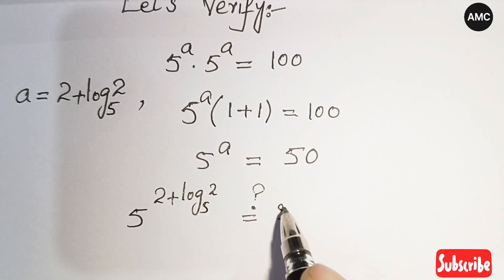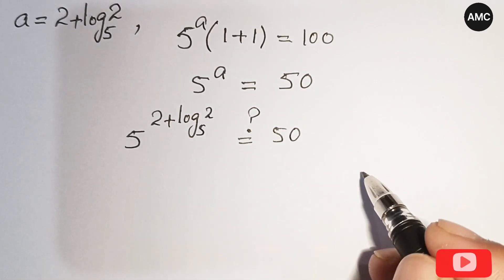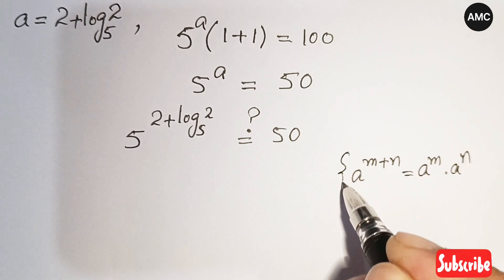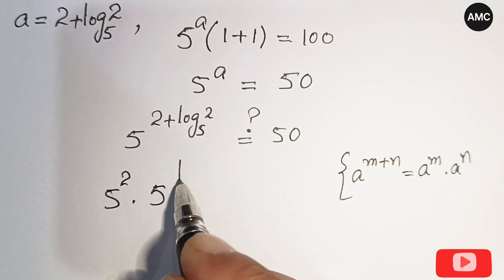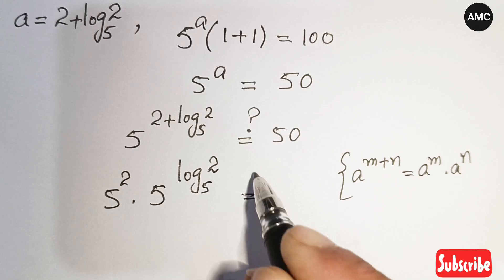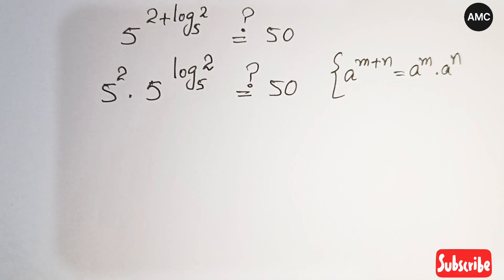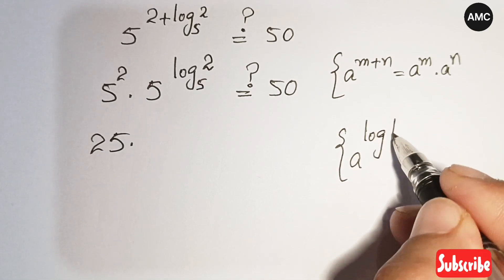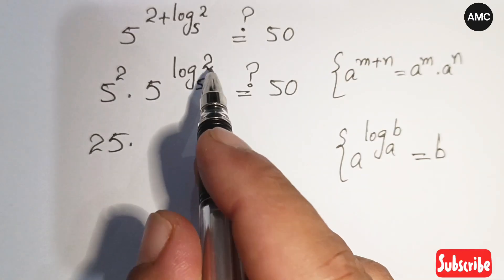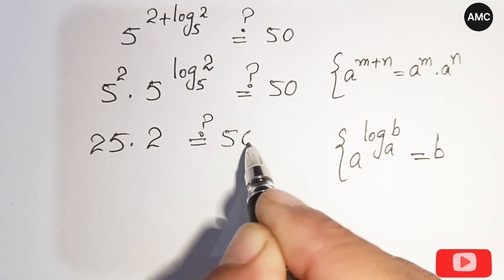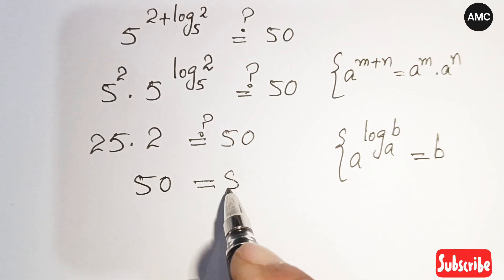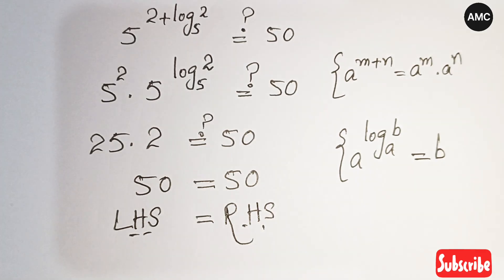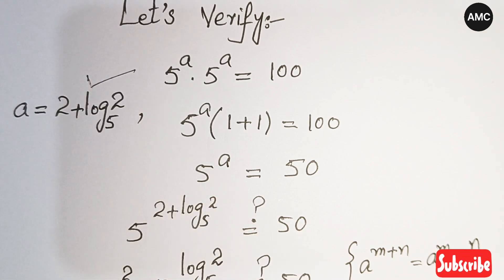Using the exponential property a to the power (m plus n) equals a^m times a^n, we get 5 squared times 5 to the power (log 2 to base 5). Now 5 squared equals 25. For the second term, using the law that a to the power (log b to base a) equals b, we get 5^(log₅2) equals 2. So we have 25 times 2 equals 50, which equals 50. Left-hand side equals right-hand side, confirming that a equals 2 plus log 2 to base 5 is the valid result.